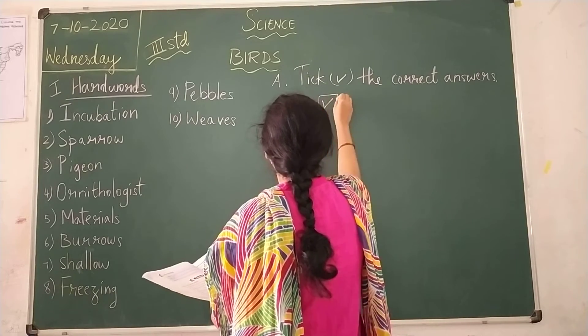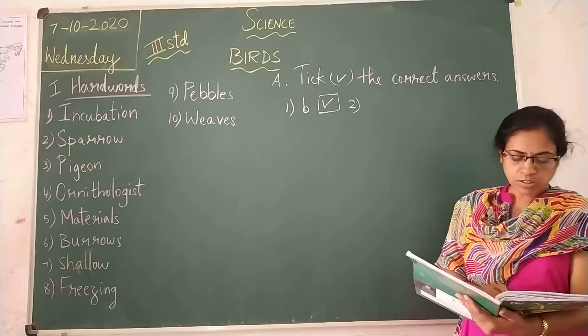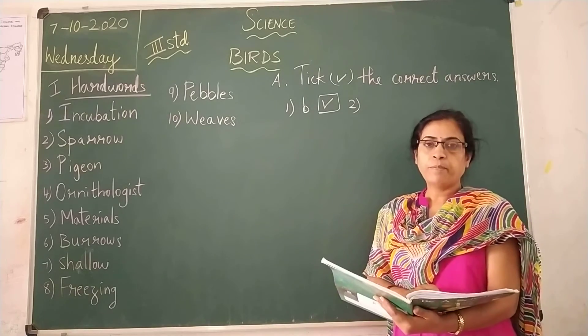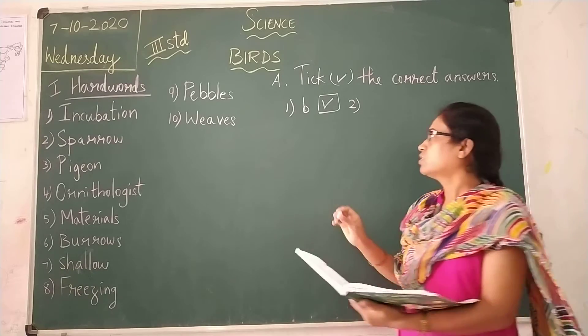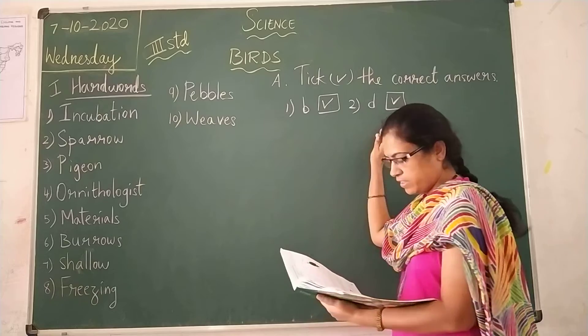So, just keep the second one. Which of the following birds is called a bird of prey? Parrot, duck, pigeon, hawk. So, D is the correct answer, just keep it here.